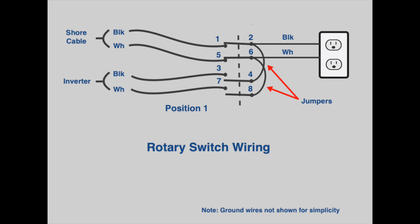So this is how the switch works. In position one, you can see that the shore power black conductor is connected to terminal one, then through the switch to terminal two, and finally to the hot or black conductor of the house circuit. Also, the shore cable white conductor follows a similar path to the house circuit neutral wire.